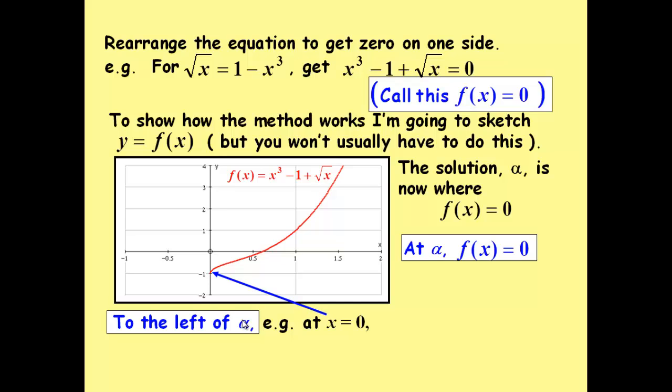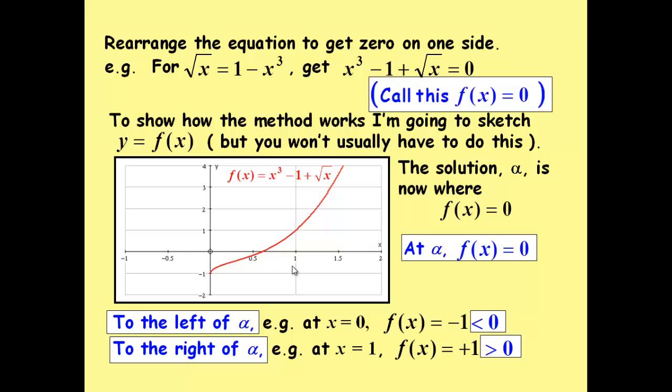If we look at the values of y where x is 0, we see it's minus 1. And where x is 1, we see the value there is 1, which is obviously first one less than 0, second one greater than 0.